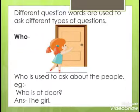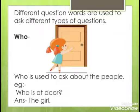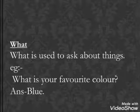Different question words are used to ask different types of questions. Like who — who is used to ask about people. See the example: Who is at the door? The girl. Now what — what is used to ask about things. What is your favorite color? Blue.